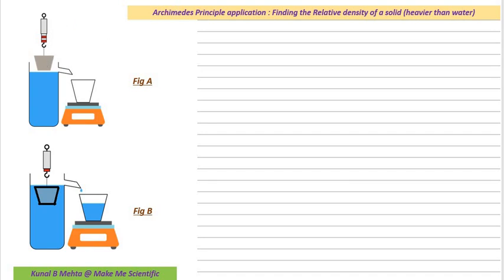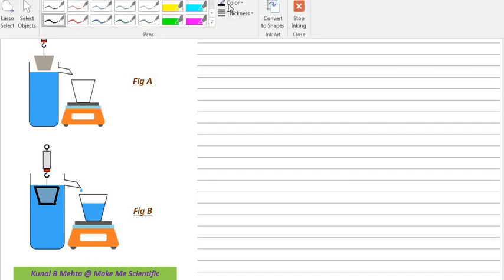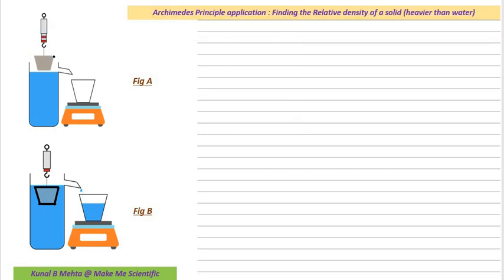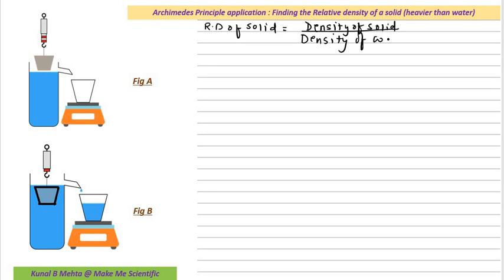Here we are given a spring balance which is attached with a solid, and that solid is quite heavy. This is the solid, and this solid will now be submerged inside this water. Since we are dealing with relative density, we know that the relative density of any solid is equal to density of solid divided by density of water.